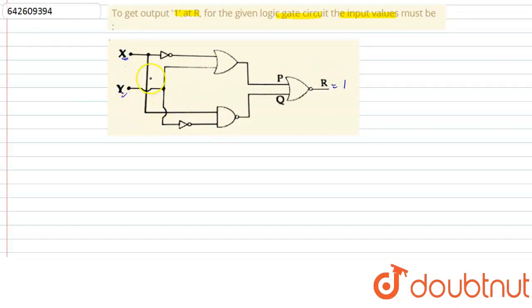So let us first find what gates are connected in the circuits. This is NOT gate, this is NOT gate, and this is also NOT gate. This one is OR gate, this one is NAND gate, and the last one is NOR gate.